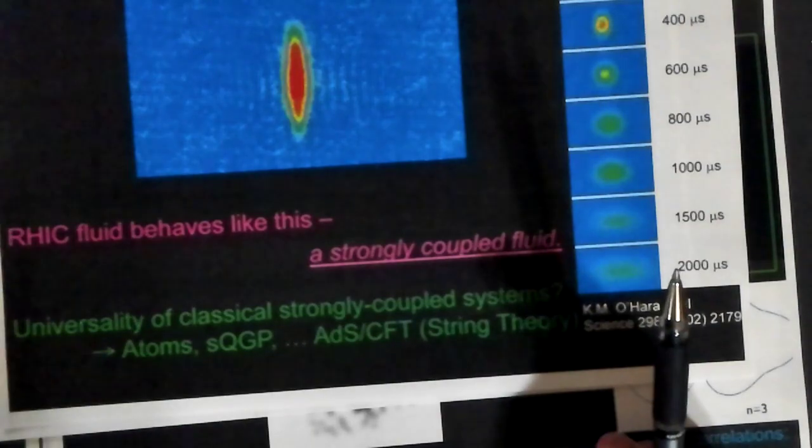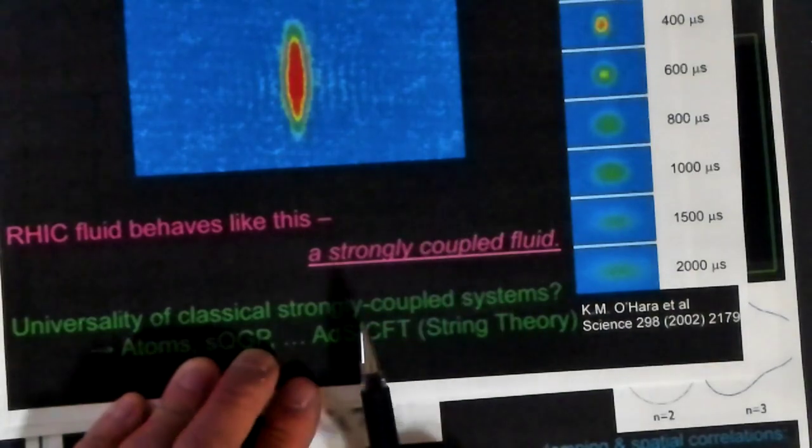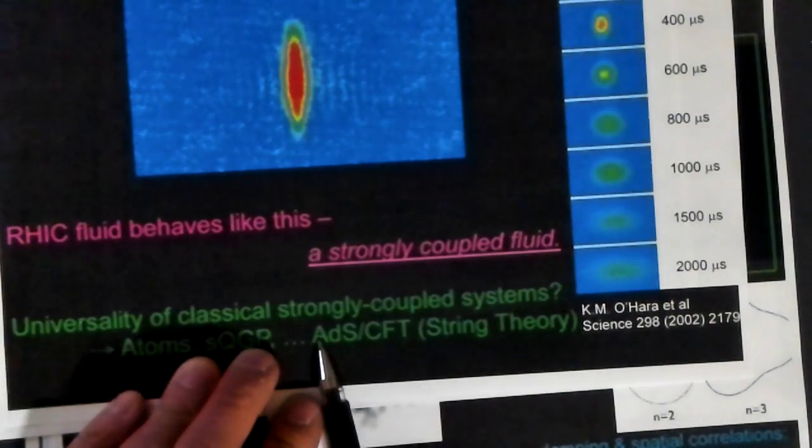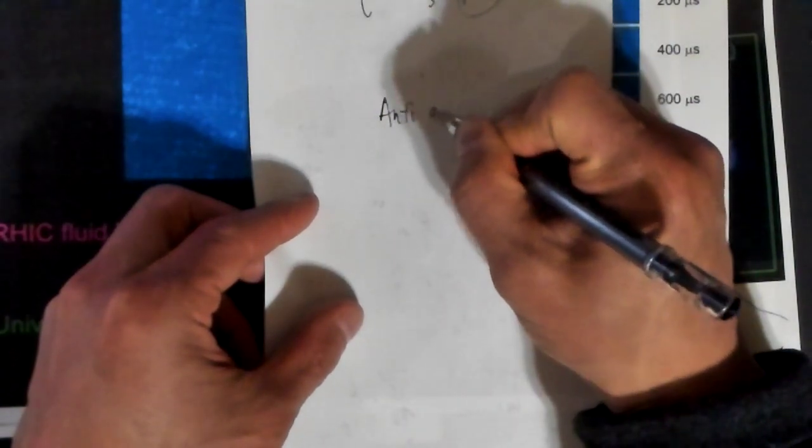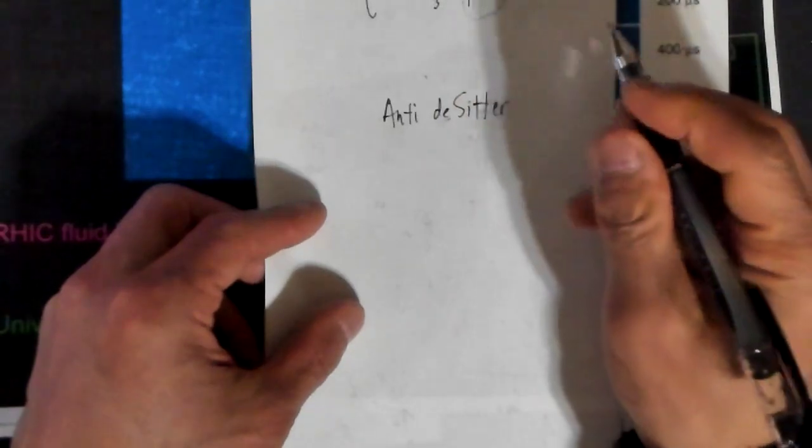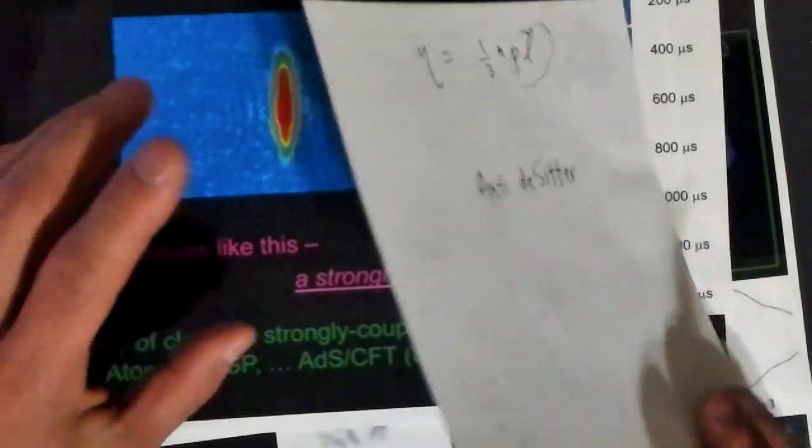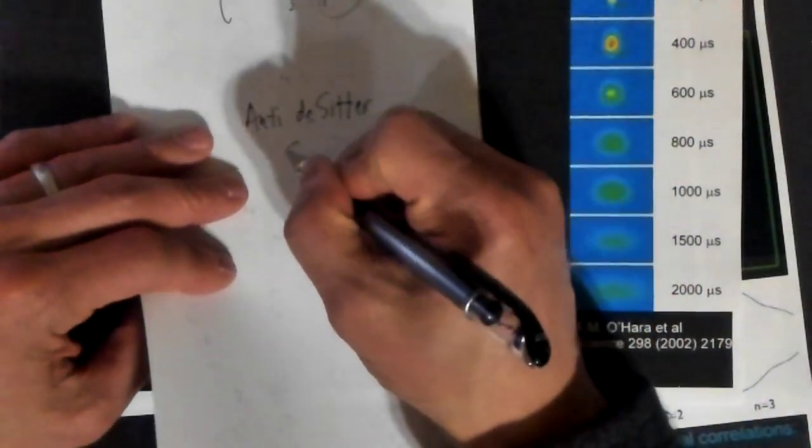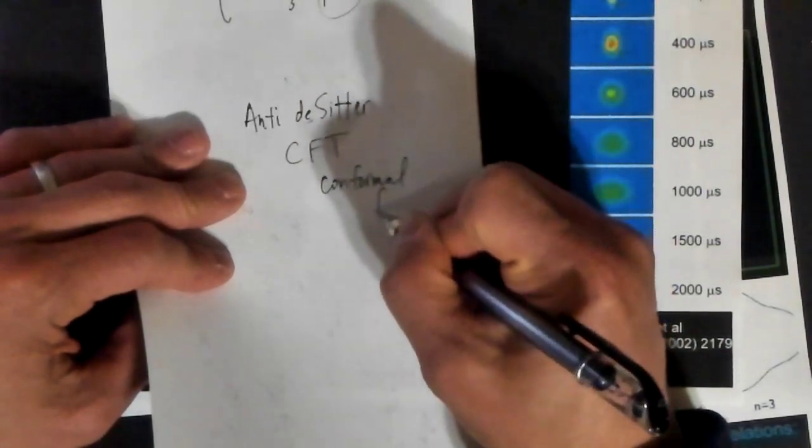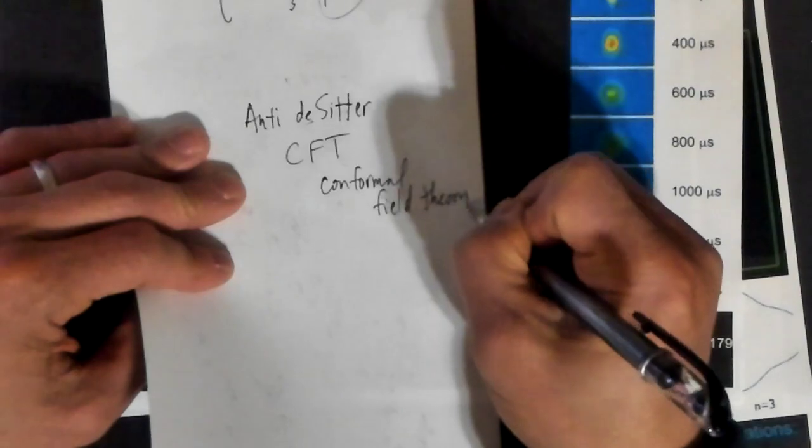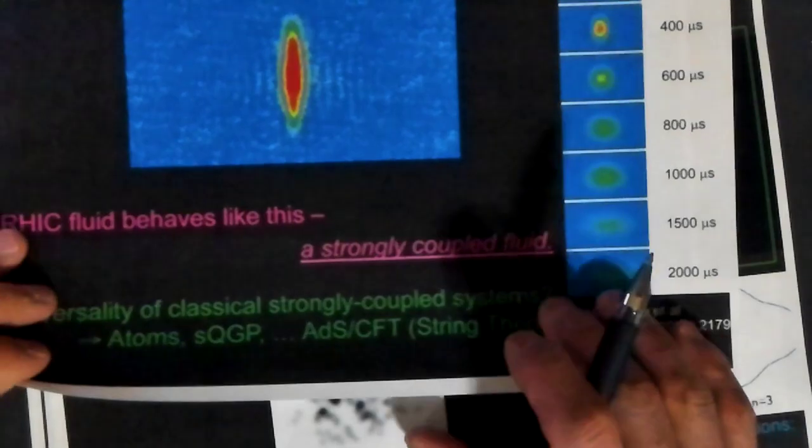By the way, I should have mentioned this is very often called the AdS-CFT duality, or AdS-CFT. AdS stands for anti-de Sitter space. It's a type of cosmology or a certain boundary condition for the universe. CFT stands for conformal field theory. When you hear the terms AdS-CFT, that's what they're talking about, this whole duality that I just talked to you about.